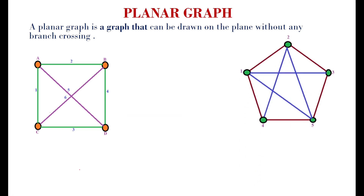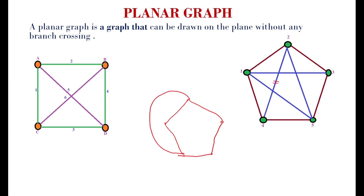Consider this graph. If we see the figure, we can say that this is the non-planar graph, but it is not a non-planar graph — it is the planar graph. I will explain now. I am going to draw the nodes, then redraw the first branch and second branch like this. Third branch, no need to redraw. We are getting region one, two, three, four. There is no two branches crossing with each other, so this is also a planar graph.